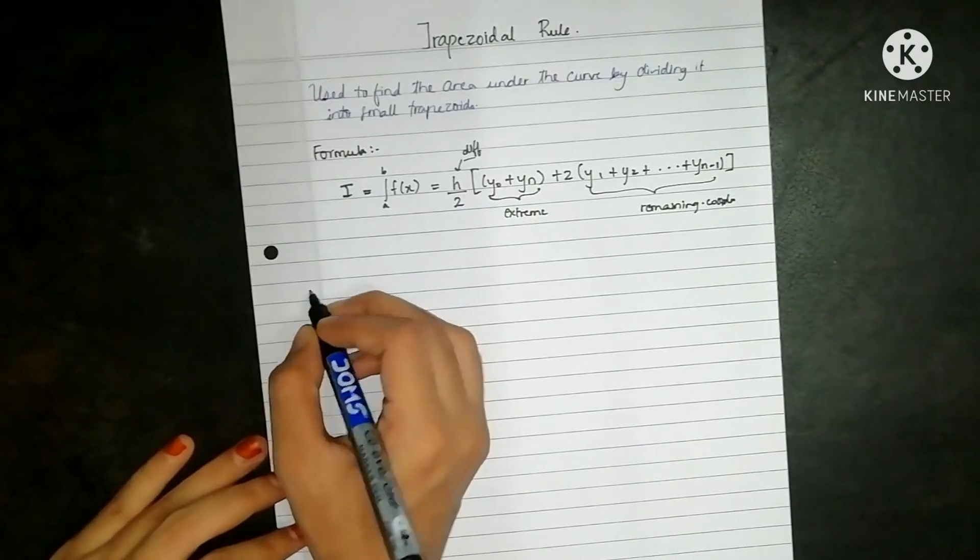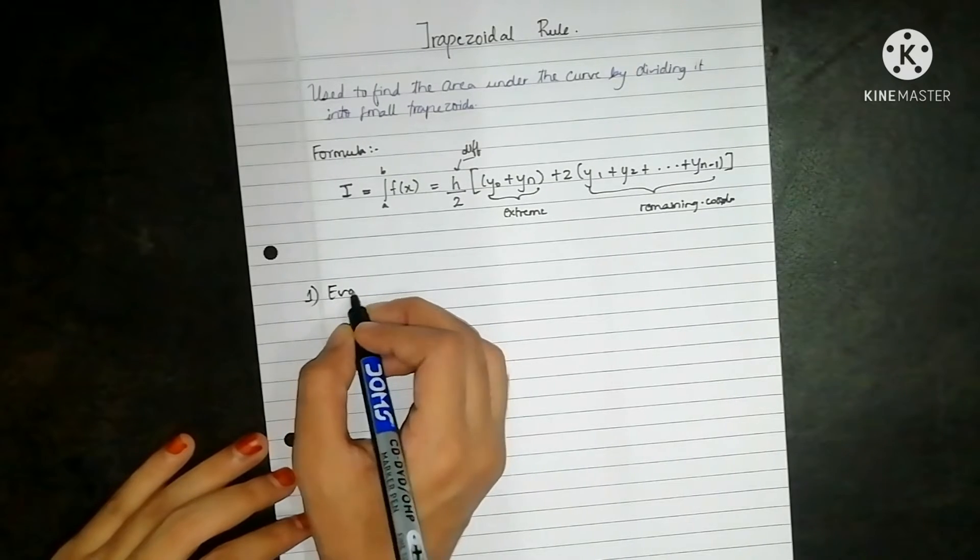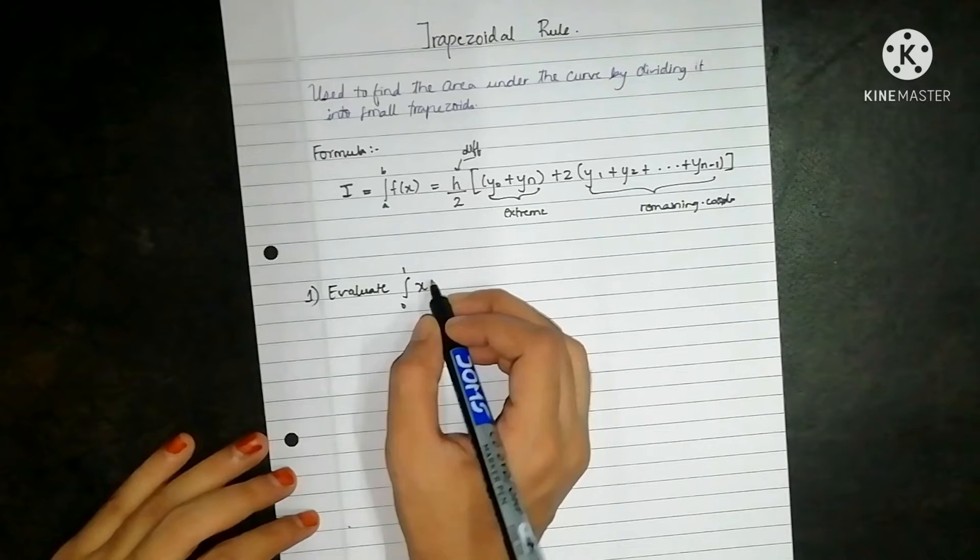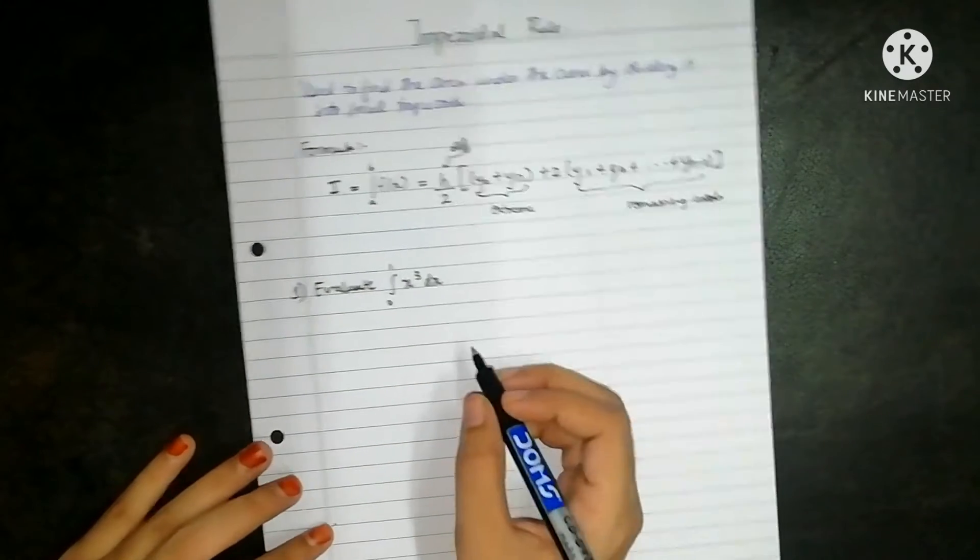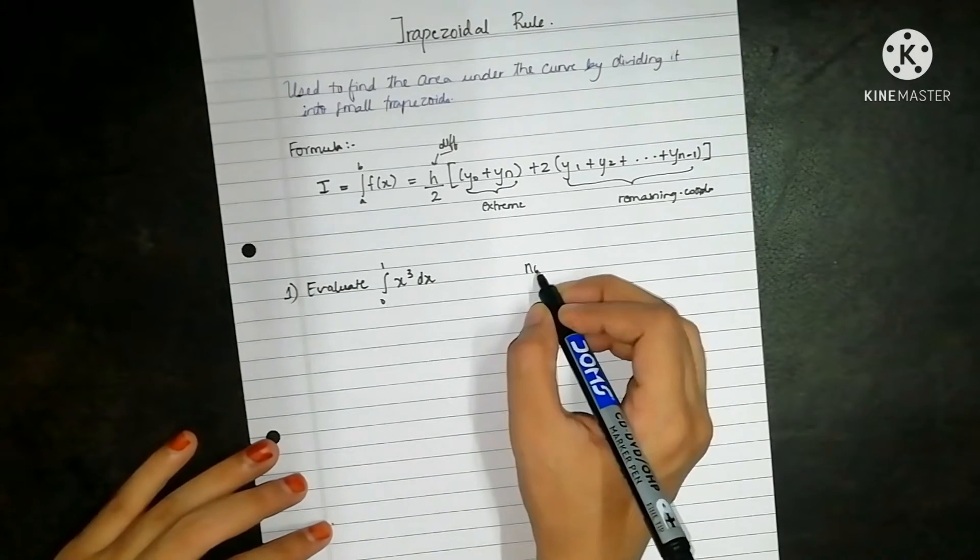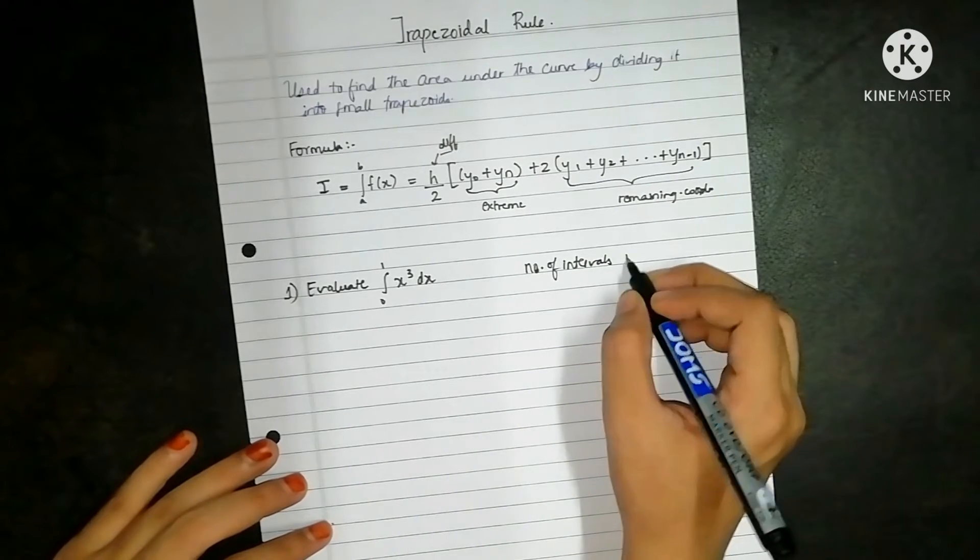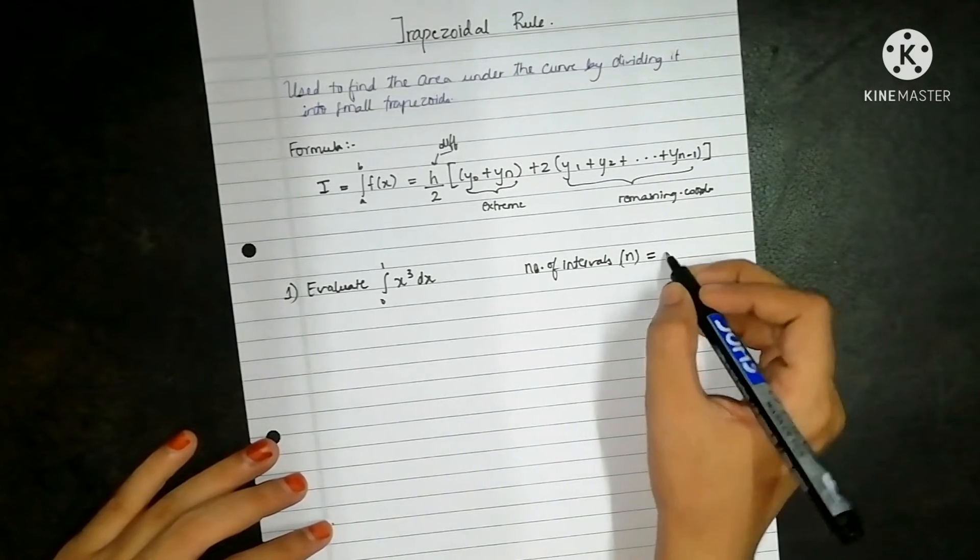So let's solve one problem. The number of intervals n is equal to 5.